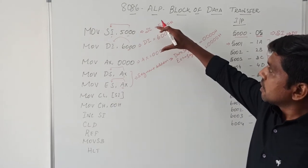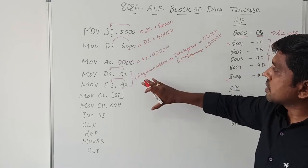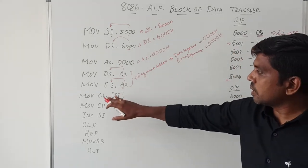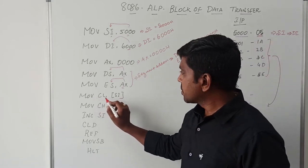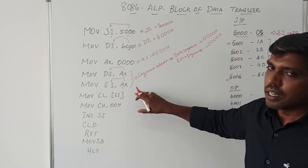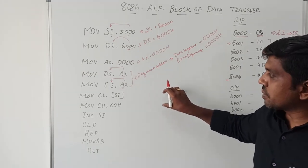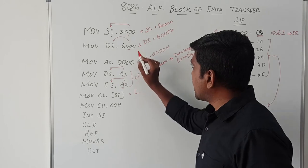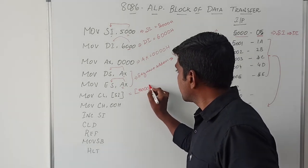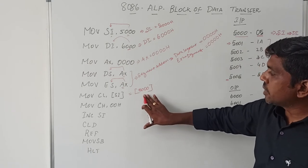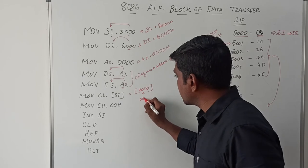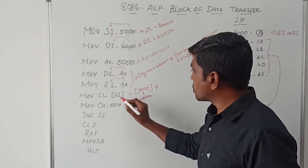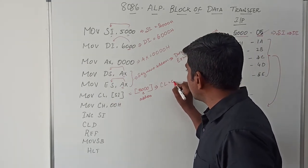So far we have initialized the source index register, destination index register, and segment address locations. Now we store the count of how many data values to transfer. That count is stored in register CL using the instruction MOV CL, [SI]. This says how many data values to transfer from source index to destination index. Since SI holds 5000H and the value at that address is 05, after execution CL becomes 05.